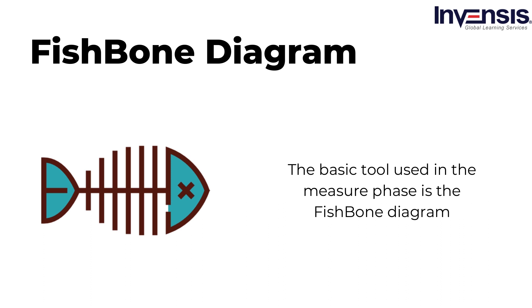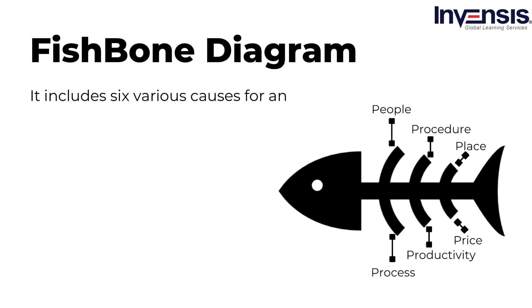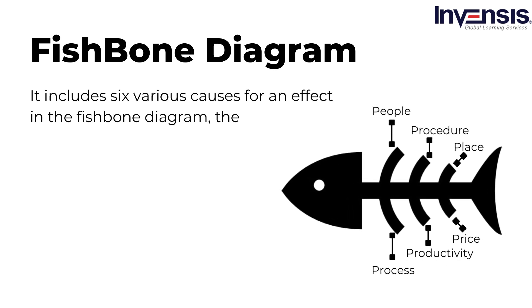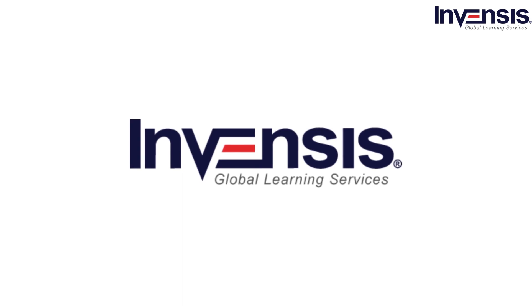Under the fishbone diagram, the major task is to find the root cause. It includes six various causes for an effect: people, process, procedure, place, price, and productivity, along with several other subsequent steps in the manufacturing industry. Using this fishbone diagram, we can define the root cause of the issue. For more details on the fishbone diagram and its functioning, enroll with us at Invensis Learning for Six Sigma training.